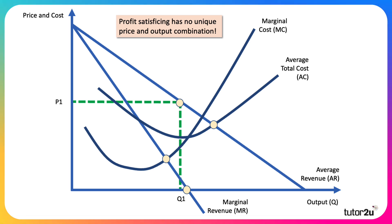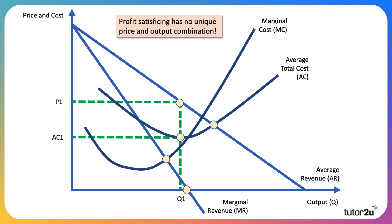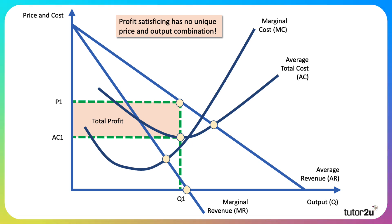So, profit satisficing — there's no unique price and output combination. P1Q1 would be a satisficing point and that would give a certain level of profit, shown by the shaded area. Satisficing is therefore movement away from profit maximisation.